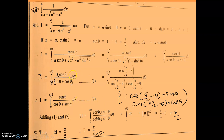From equations 1 and 2, the denominators are same and the limits are also same, so we can add them. Adding 1 and 2: 2i equals integral 0 to pi by 2 of (cos theta plus sin theta) upon (cos theta plus sin theta) d theta. This cancels to 1, so integral 0 to pi by 2 d theta equals pi by 2 minus 0 equals pi by 2. Therefore 2i equals pi by 2, and i equals pi by 4. That is the answer.